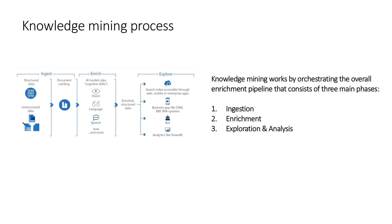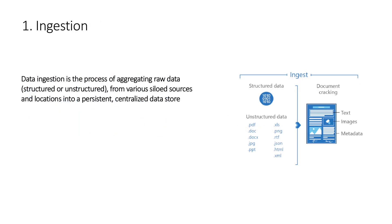Knowledge mining works by orchestrating an overall enrichment pipeline that consists of three main phases: ingestion, enrichment, and exploration and analysis. Data ingestion is the process of aggregating raw data — structured or unstructured. We can have a SQL database or other structured data, and on the other side, unstructured data like PDF files, doc files, etc. Data ingestion aggregates raw data from these documents across various silos, sources, and locations into a persistent centralized data store.